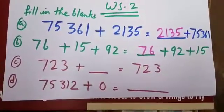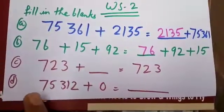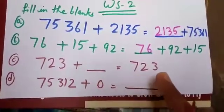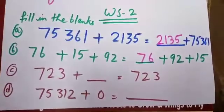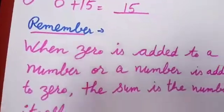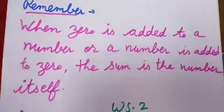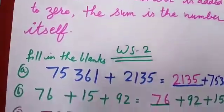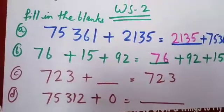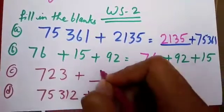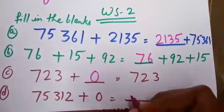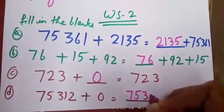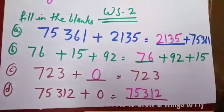Now come to Part C: 723 plus dash is equal to 723. When 0 is added to a number or a number is added to 0, the sum is the number itself. So I will write here 0. Now in Part D, I will write the number 75312.